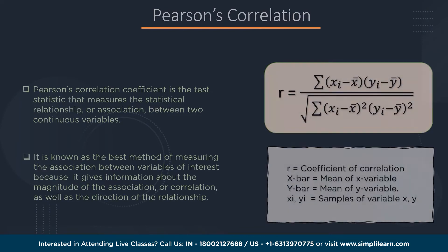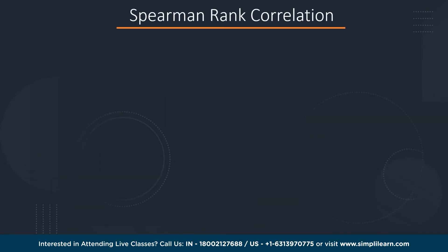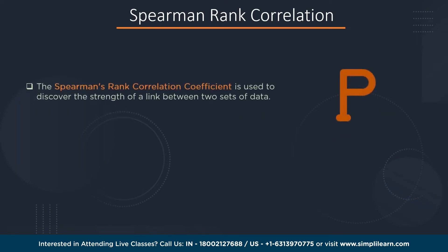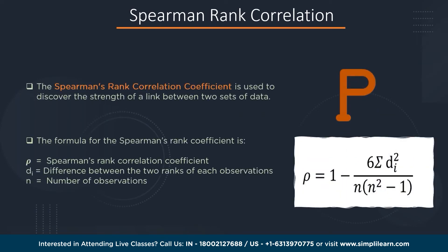The second method is Spearman's rank correlation. This is used to discover the strength of a link between two sets of data. The formula is: ρ = 1 − (6Σdi²) / (n(n² − 1)), where ρ is the Spearman's rank correlation coefficient, di is the difference between the two ranks of each observation, and n is the number of observations.